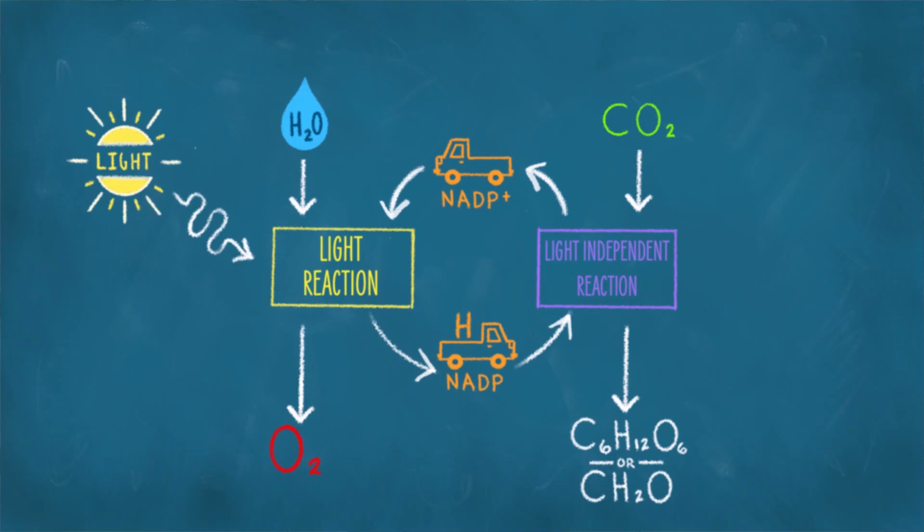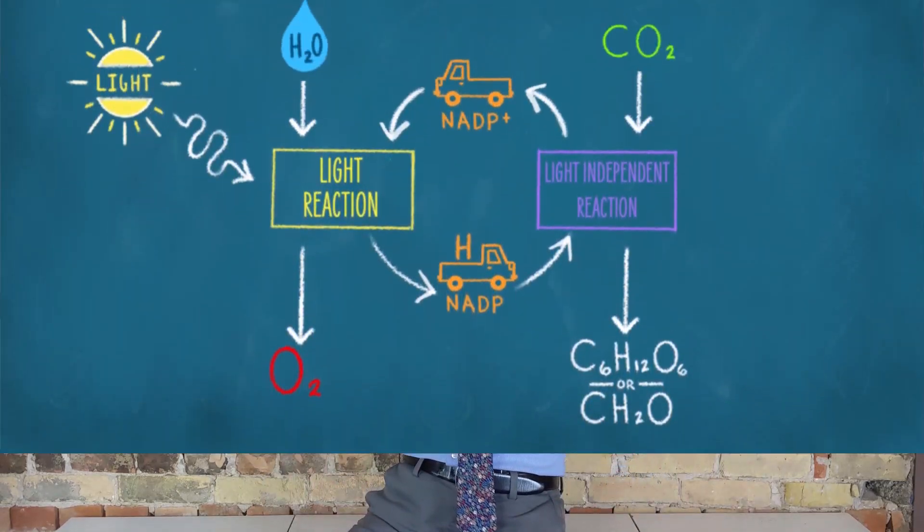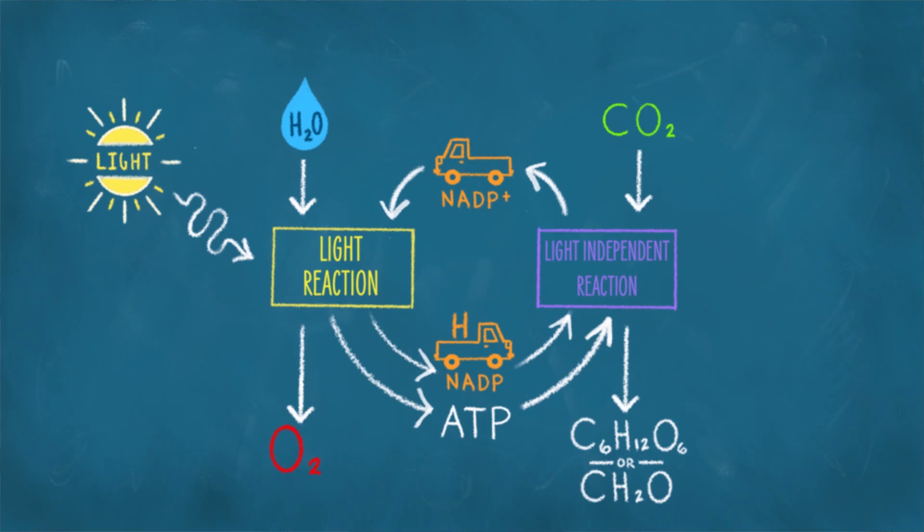All that's needed now is some C and some O. If only there was a molecule floating around everywhere that had both — CO2! So CO2 comes into the light-independent reaction, and now we have all the ingredients needed to make sugar, CH2O. The problem is that it takes energy to break apart CO2 and form CH2O, and this reaction doesn't use the sun for power. So where does it get the energy? From the same source that cells usually use: ATP — adenosine triphosphate. Energy is released by breaking off one of the phosphates to form adenosine diphosphate, ADP, and inorganic phosphate, breaking a high-energy bond and forming lower-energy bonds for a net release of energy. This energy is used to break apart CO2 and form CH2O.